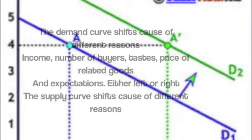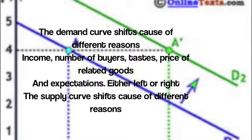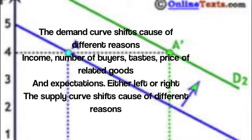The demand curve shifts cause of different reasons: income, number of buyers, tastes, price of related goods, and expectations, either left or right.